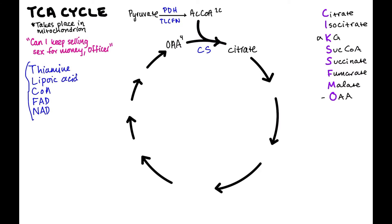Then we go from citrate to isocitrate. The enzyme that does this is called aconitase — not a super important enzyme. All it does is rearrange citrate, so it doesn't require any energy or generate any products. Then we go from isocitrate to alpha-ketoglutarate, and this is an important step because it is the rate-limiting step. The enzyme here is isocitrate dehydrogenase, or IDH.